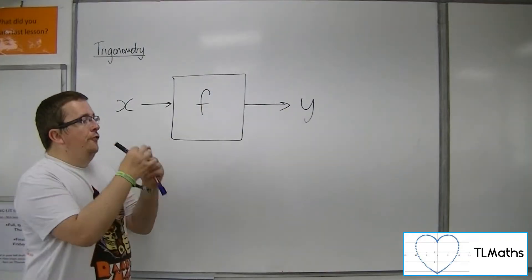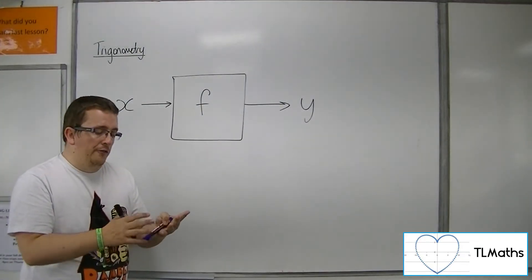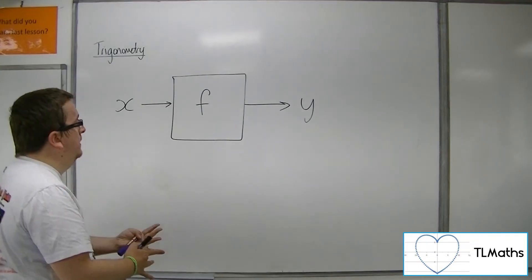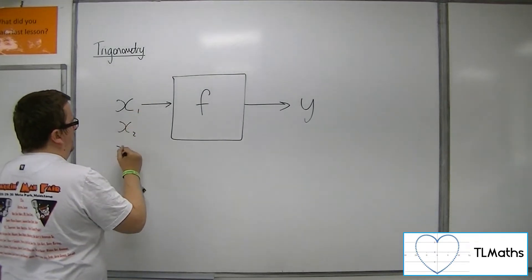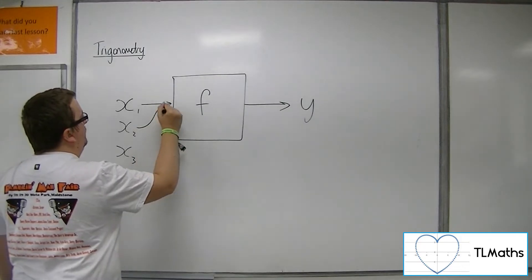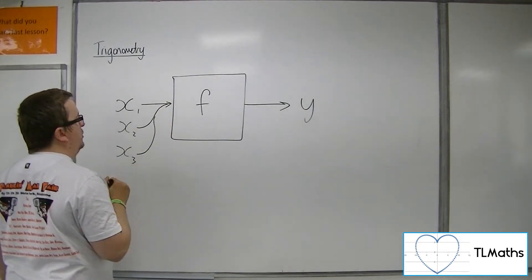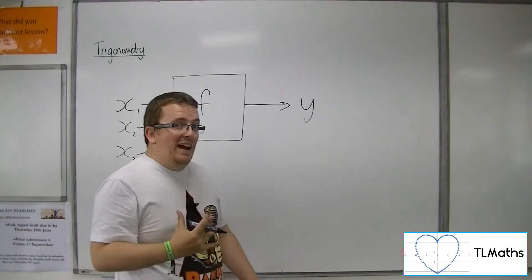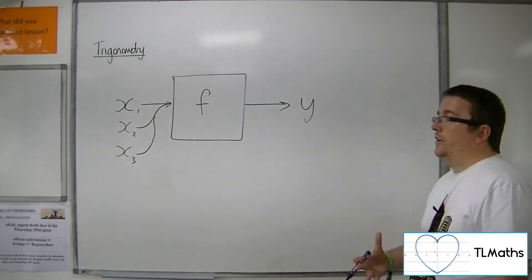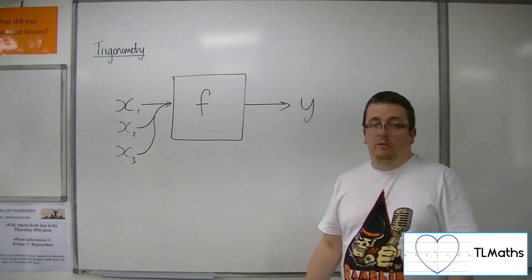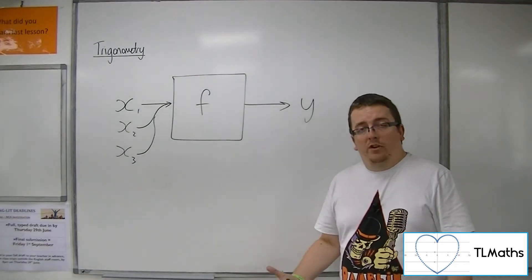For some functions that we meet, there are actually a few different values of x that I could put in to get out the same y. Sine, cosine, and tan are examples of this because they're periodic.